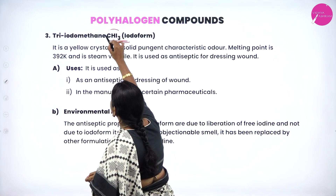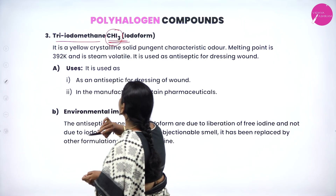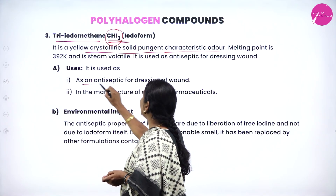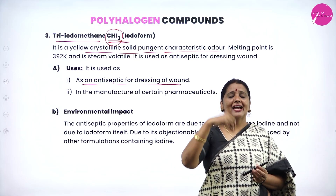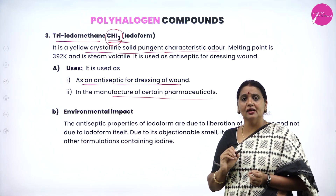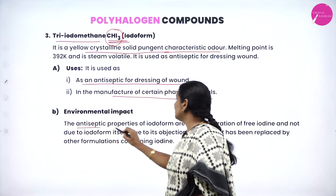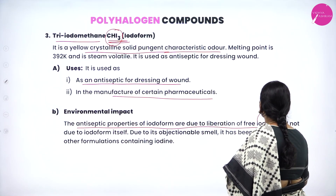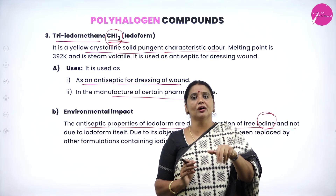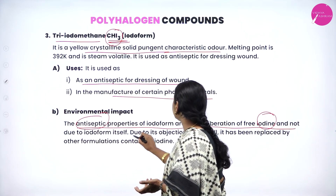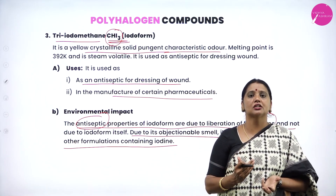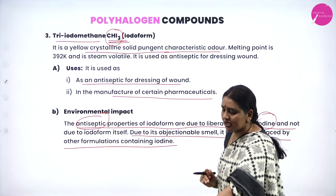Next is iodoform (triiodomethane, CHI₃). It is a yellow crystalline solid with a pungent smell. It is used as an antiseptic for dressing wounds and in the manufacture of certain pharmaceuticals. The antiseptic property of iodoform is due to the liberation of iodine — it is the liberated iodine that acts as the antiseptic. Due to its objectionable smell, iodoform has been replaced by other formulations containing iodine.